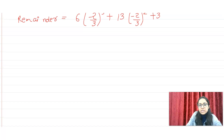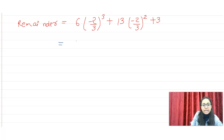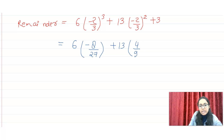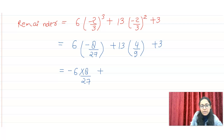Now what do we have to do? We have to solve this. First of all, we write 6. When we open the cube, since the power is odd and the sign is negative, we get minus 8 by 27. Then we write plus 13 times 4 by 9 — since the power is even, the negative sign becomes positive. Then plus 3.